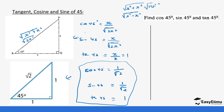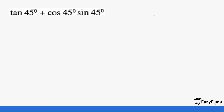So if we were to use the same values we got: cos 45 is 1 over root 2, sine 45 is 1 over root 2, and tan 45 is 1. So you can be able to solve this question.